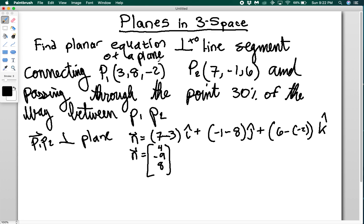But what I need is, I still need a point. So I've got to figure out what the point is. So to get the point, I'm going to do the point P, right, or the vector that points to that point. It's going to be equal to 3i hat plus 8j hat, got to be careful I don't run out of the room here, minus 2k hat. So this is one of my points, my point one. And I have to add to that the vector that's 30% of the way from P1 to P2, right? So it's going to be 0.3 times the normal vector that I just found. So 4i hat minus 9j hat plus 8k hat.